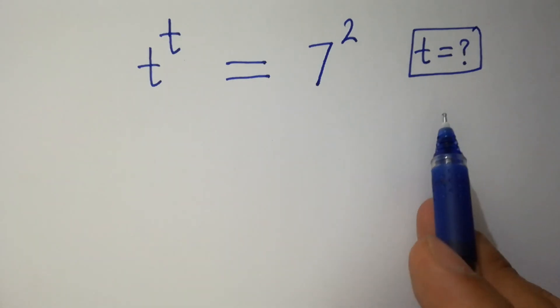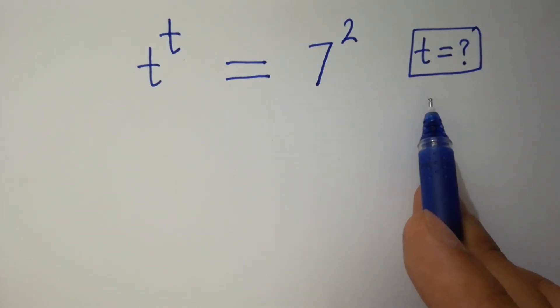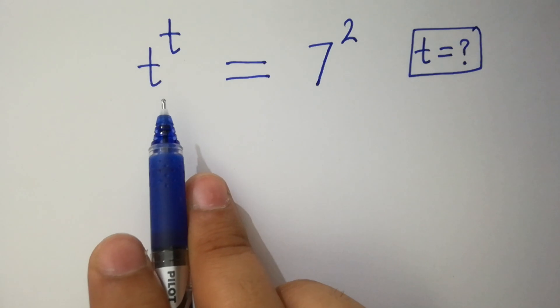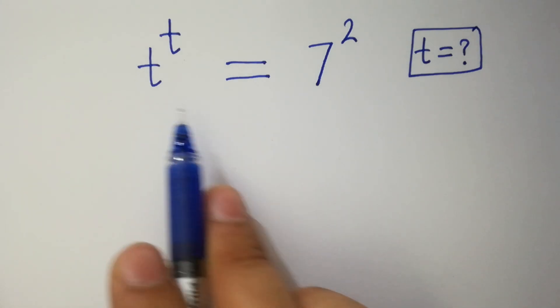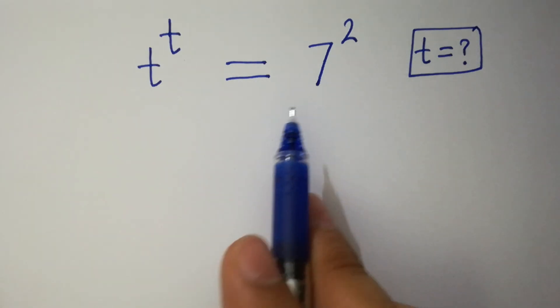Hello friends. Find the value of t if t to the power t equals 7 squared.